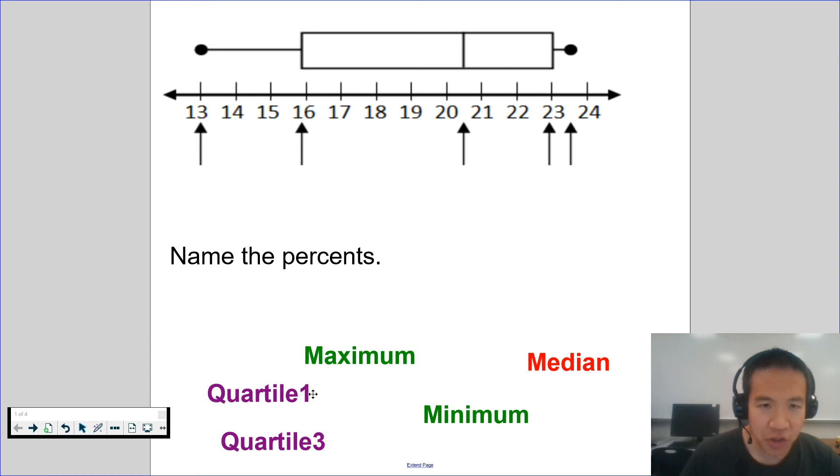So today we talked about box plots. Let's see if you remember the labels. There are five major parts of a box plot.